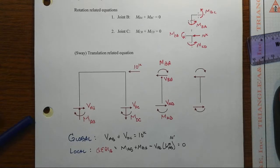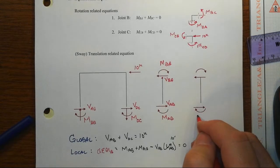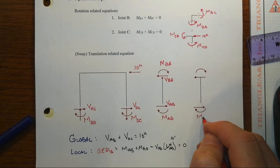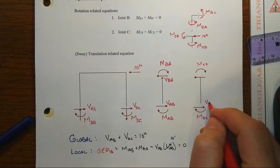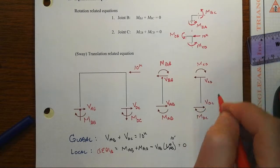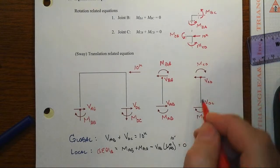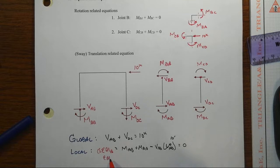And then we do the same thing for the other column: MDC there, MCD at the top. We have VDC at the bottom, VCD at the top. Let's sum now moments up at the top.